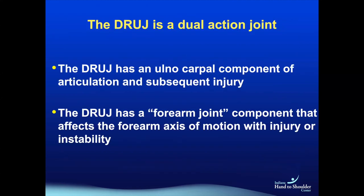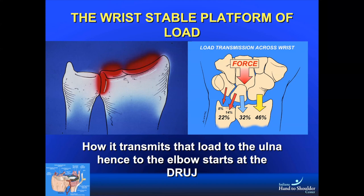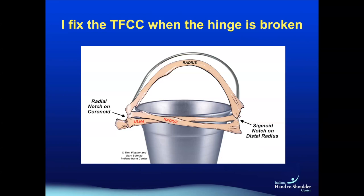The DRUJ is like the glenohumeral joint — think of it as a shallow glenoid with a more rounded humeral head. It rotates and translates; it's a slide-and-glide joint and inherently unstable. We need to add stability. Extrinsic stability comes from the ECU, the ECU sheath, pronator quadratus, the distal oblique ligament, and the distal interosseous membrane. It's a dual-action joint with both ulnocarpal and radiocarpal components. Wrist loading is about 80% on the radius and about 16% on the ulna.